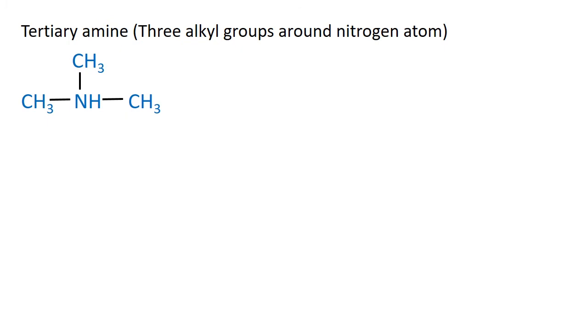In the tertiary amine, there are three alkyl groups around nitrogen atom. According to the isomers, the physical and chemical properties vary.